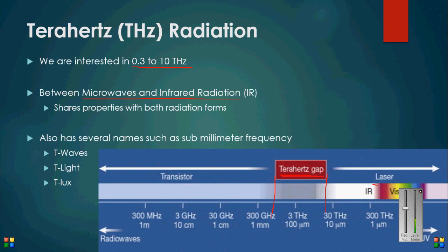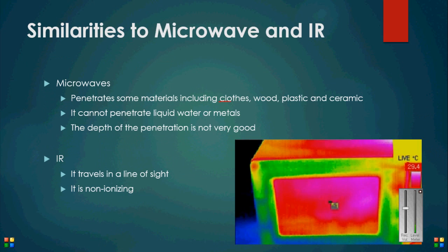Like microwaves, terahertz radiation can penetrate a wide assortment of materials including clothing, paper, cardboard, wood, masonry, plastics, and ceramics. However, it cannot penetrate polar liquids like water or metals.